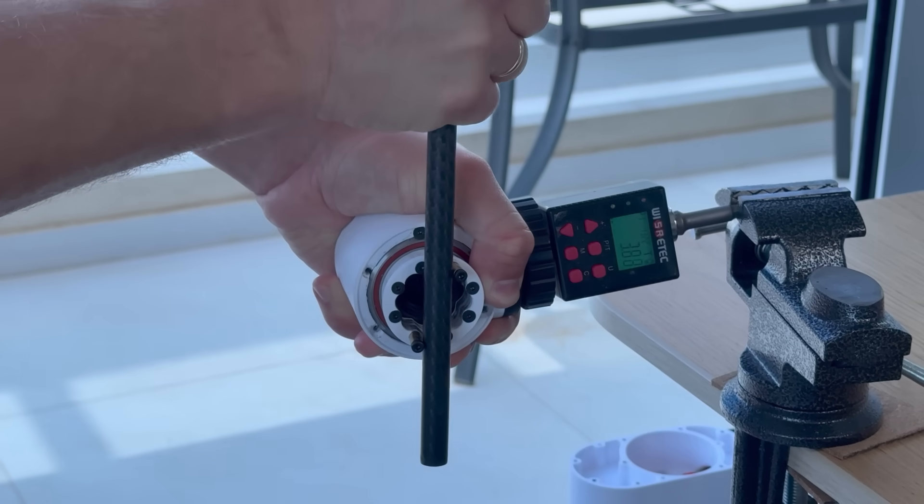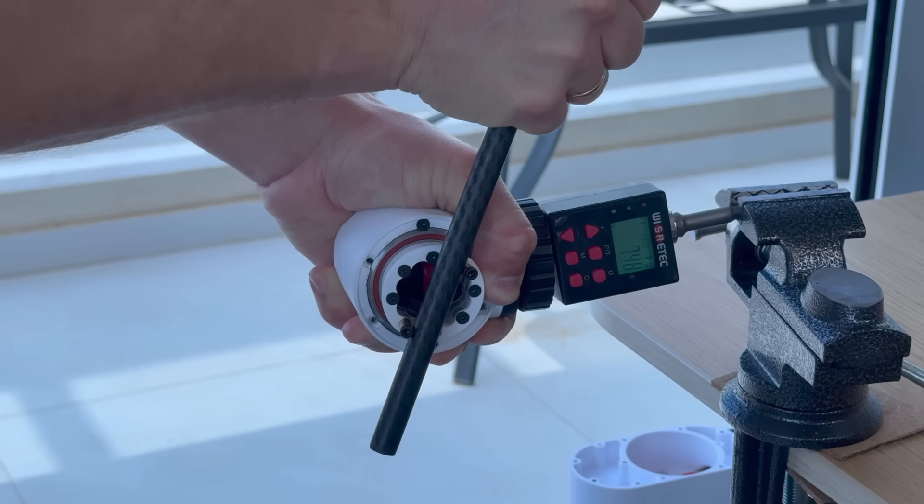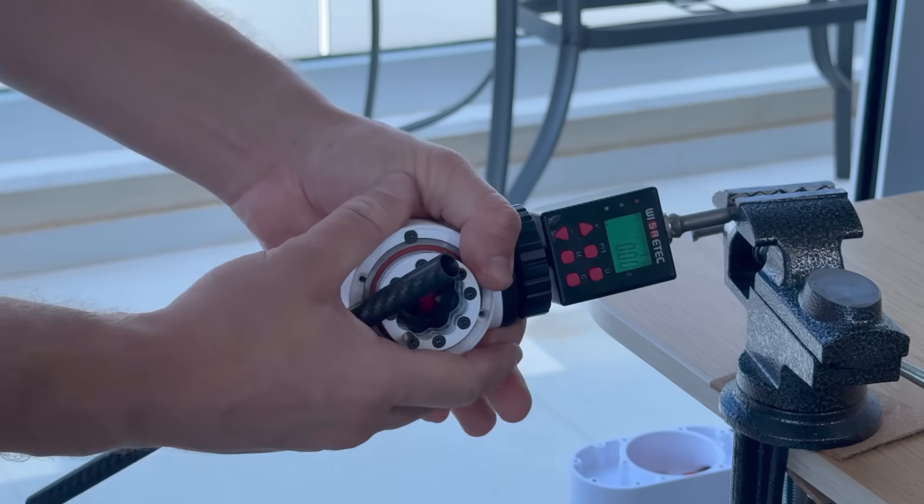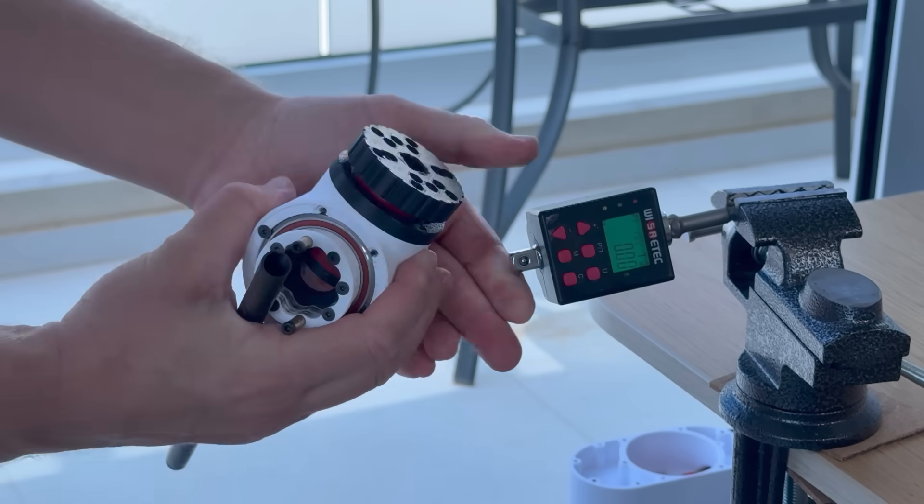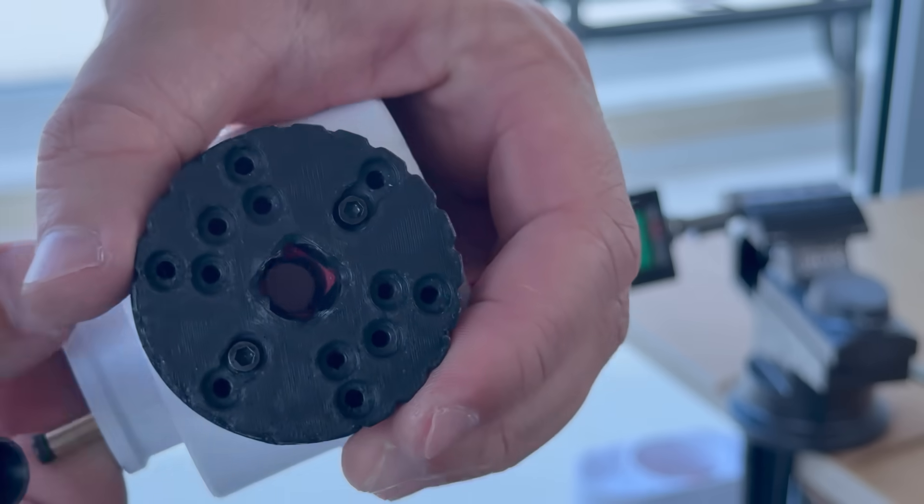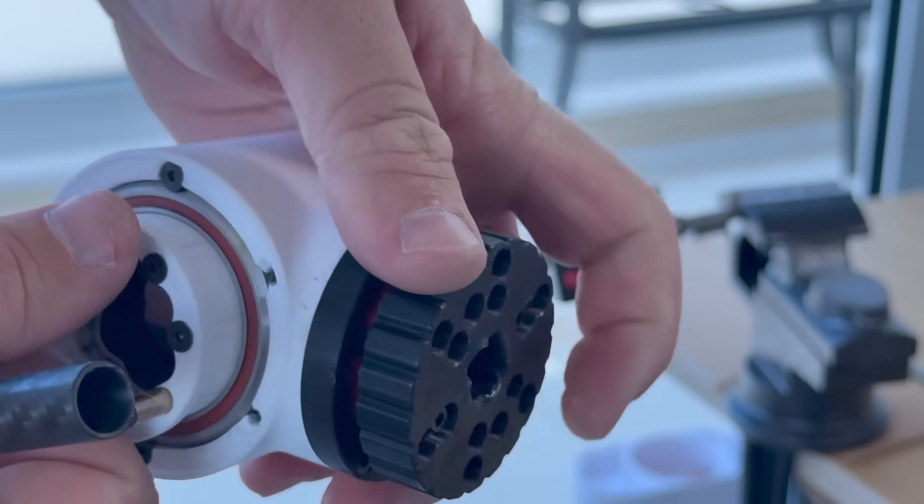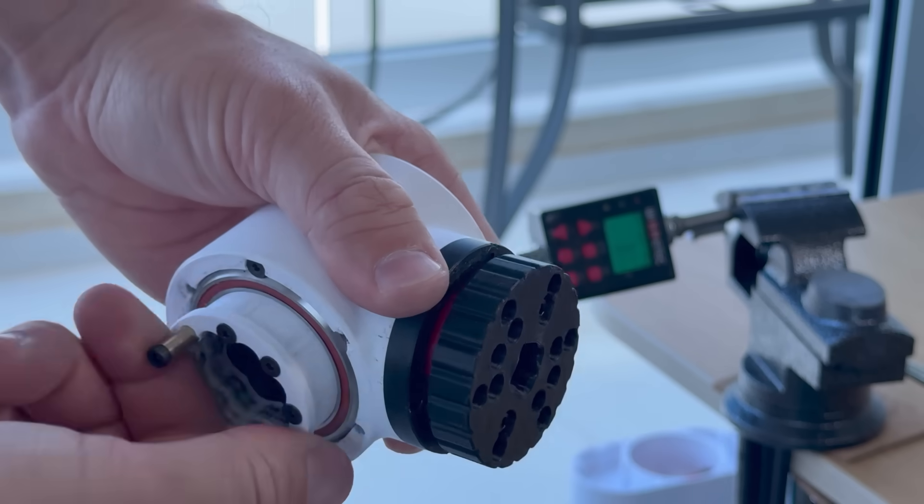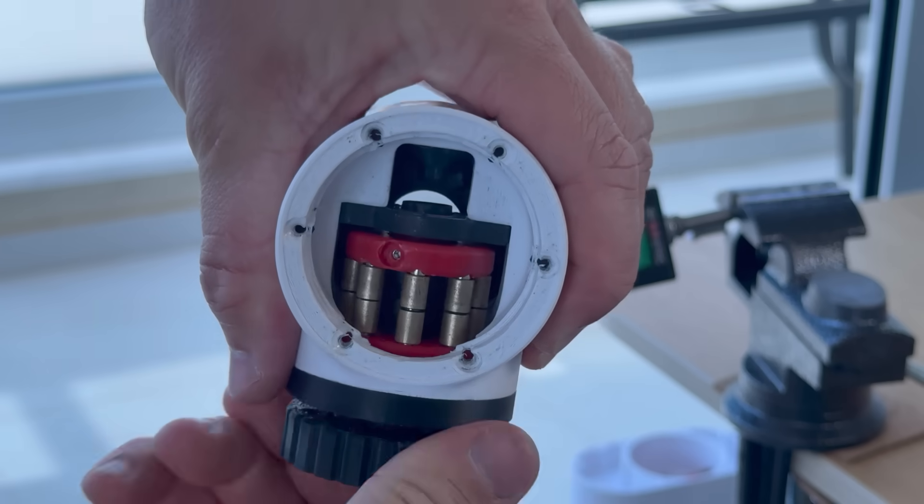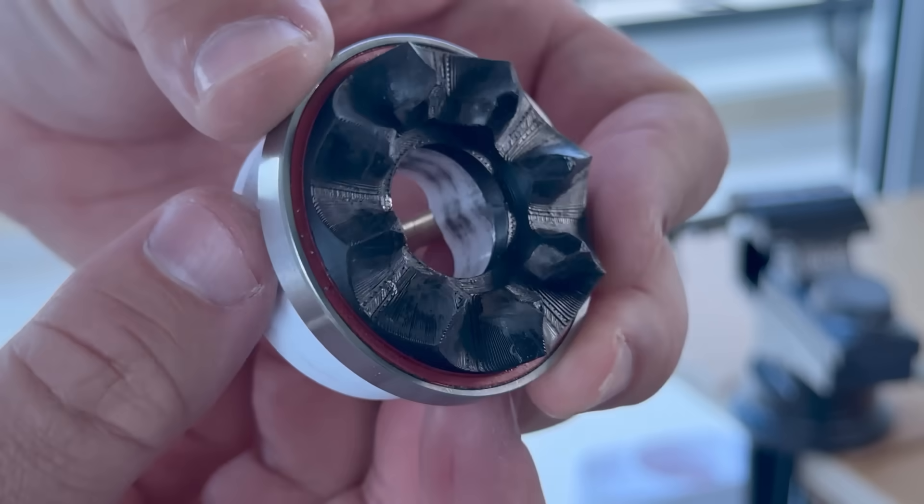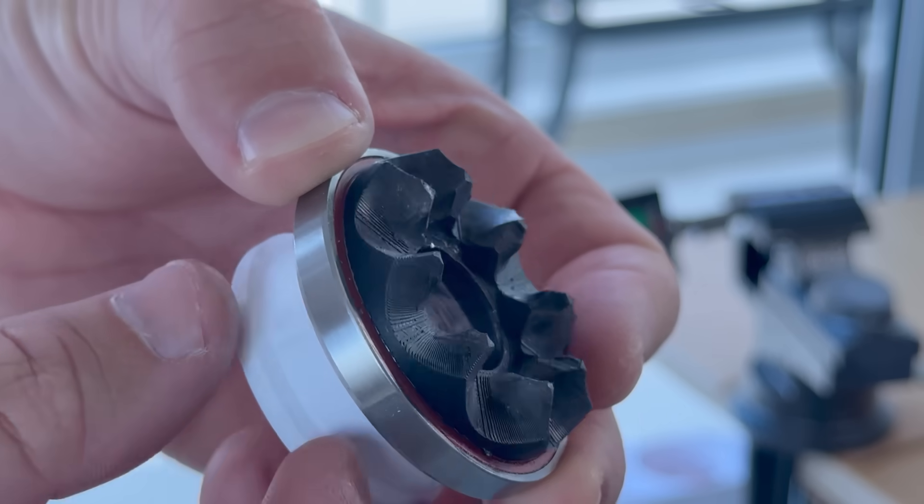Then I ran a quick torque test and pushed it to 9 Nm—that's the maximum what a tiny reducer can handle. The square hole couldn't take it and gave out. To my surprise, the angle drive held up really well. The crown gear had no visible dents or deformation at all.